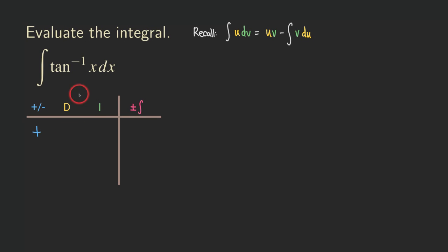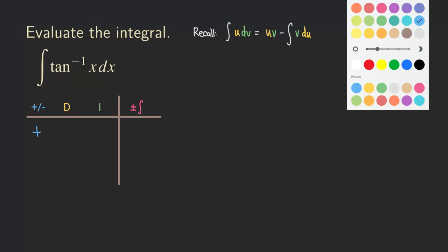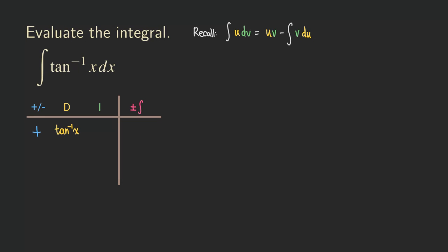For u, we choose whatever we can differentiate. In this case we only have one function, so u is the tangent inverse of x — there are no other choices. For the green I-column (the integration column), once we've placed tangent inverse in the D-column, the only thing left is 1. We omit the dx in the table for simplicity, but understand that the dx belongs there.